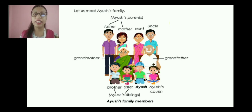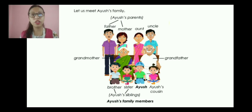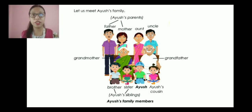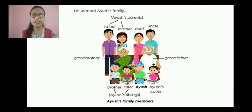He also has a cousin. Whom do we call cousin? Cousin is the brother or sister who belongs to aunt and uncle — who is the child of our aunt and uncle. Siblings are those brothers and sisters who are our mother and father's sons and daughters. This is the difference between siblings and cousin.